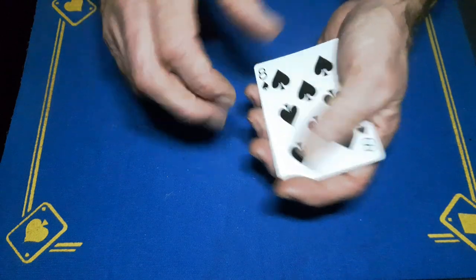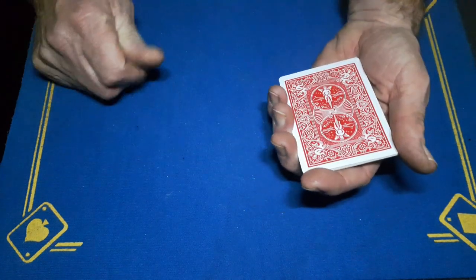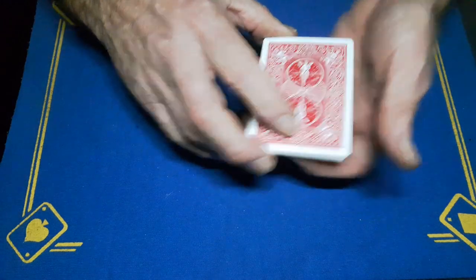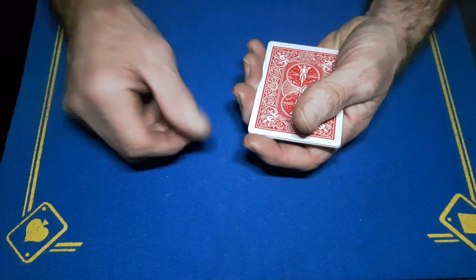When you get to this point, this is a double. You're going to place this on the top but catch a little break and then just turn this over. So, these cards are marked.